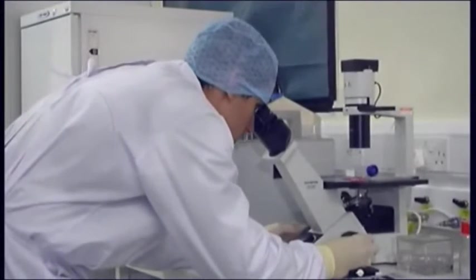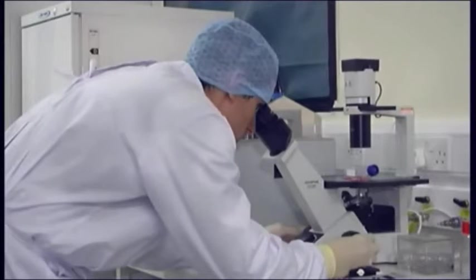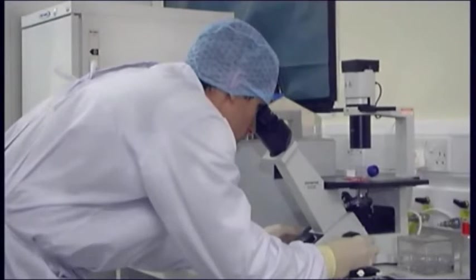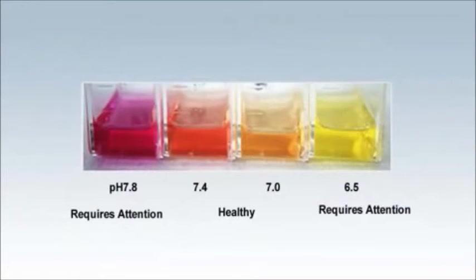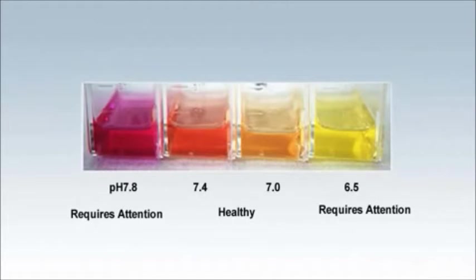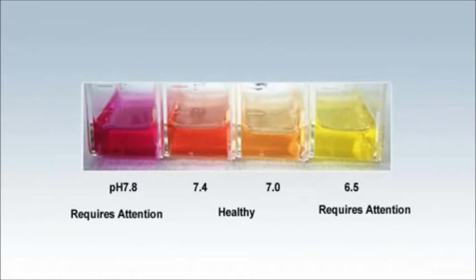Cell growth to confluence. Monitor cell cultures daily using an inverted phase microscope to assess the morphology and density of the cells. Another indicator of the culture's well-being is the colour of the media if it contains the dye phenol red. Cultures become more acidic as cells grow due to an accumulation of lactic acid. A healthy culture is indicated by an orange colour, which is approximately equivalent to pH 7.2. This will slowly become more yellow as the cells respire and grow.